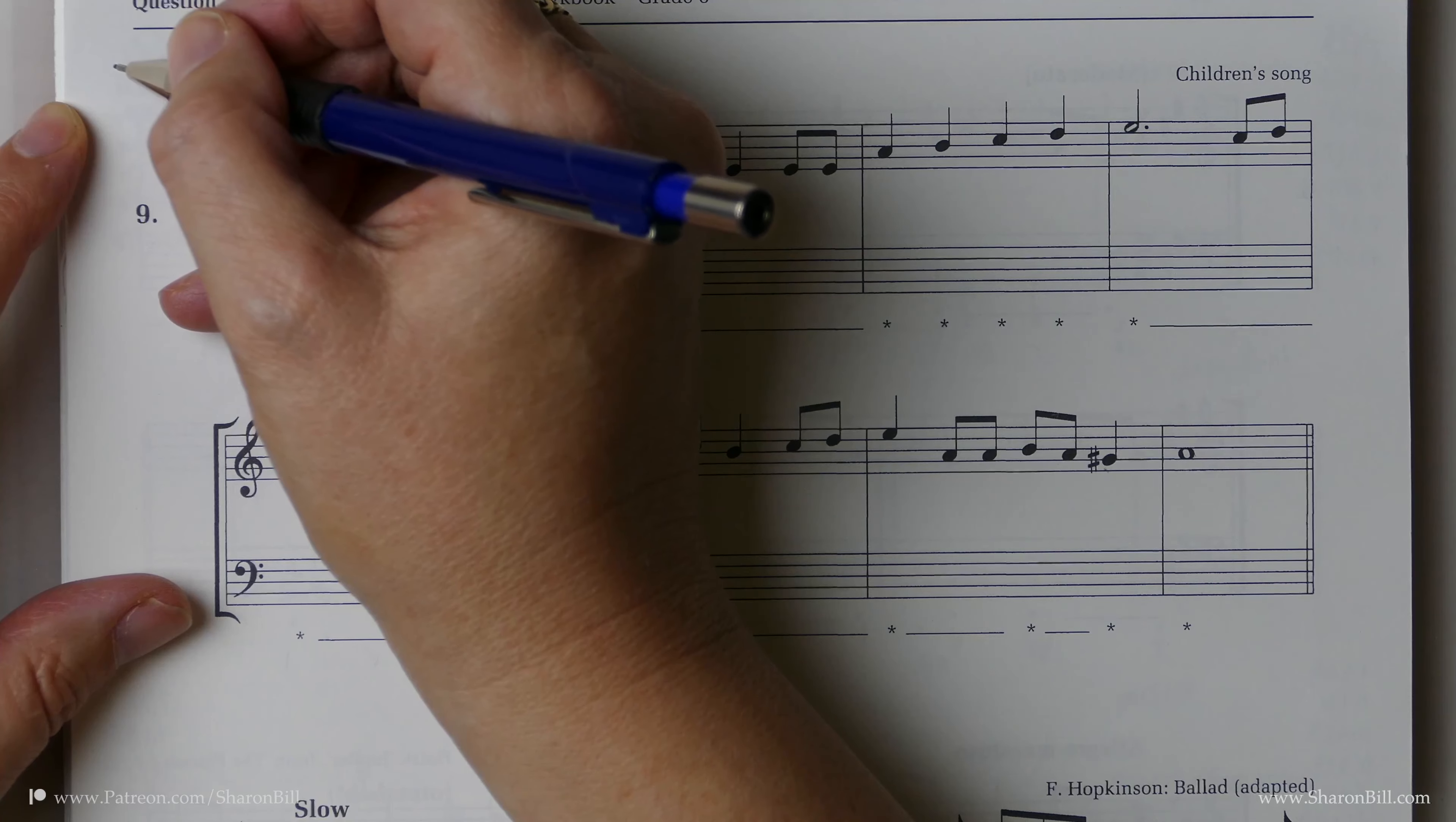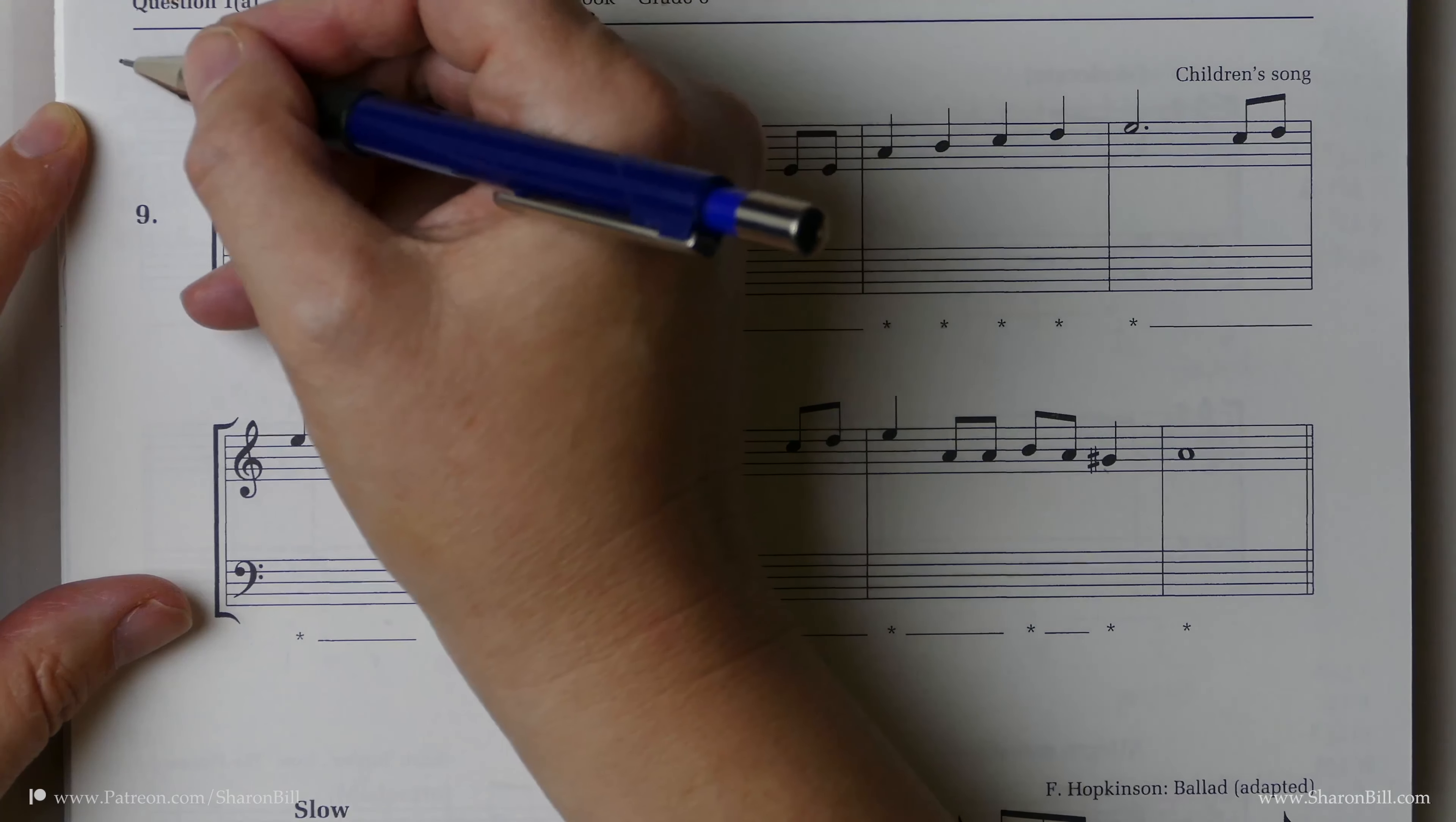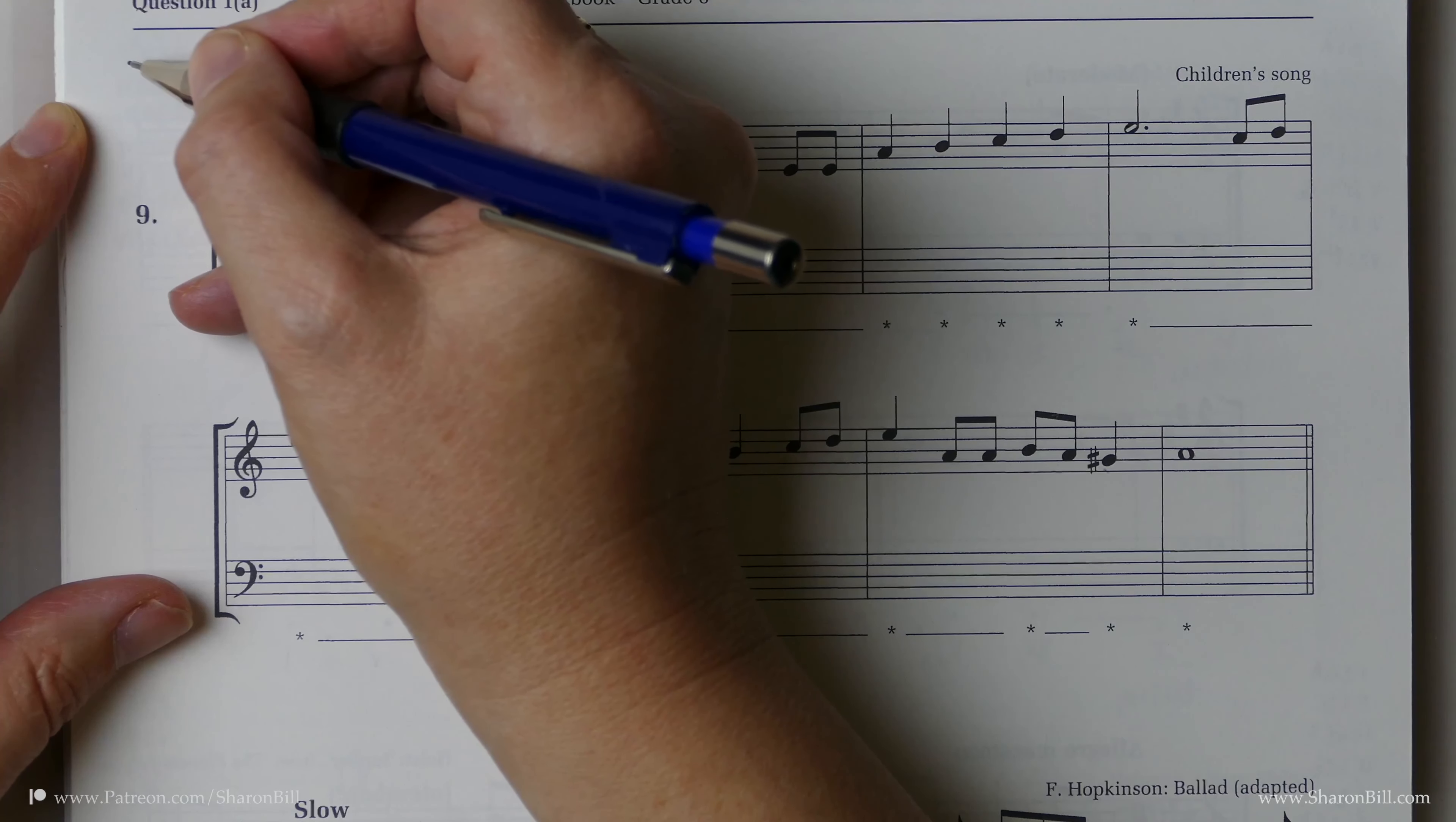but it's best for the most part to stick to the primary triads. There'll be a couple of exceptions to that. Sometimes a chord 2, sometimes maybe a chord 6 or a 7b or something like that, but mostly the primary triads. Chords 1 and 4 and 5 are our main choice.